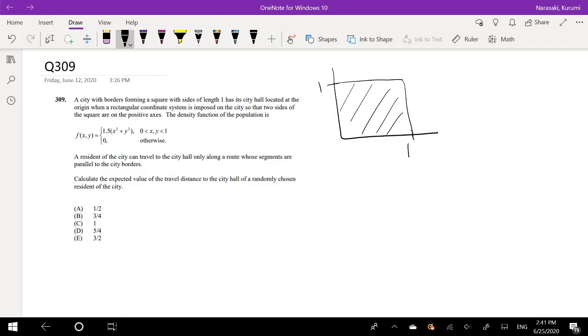A resident of the city can travel to the city hall only along a route whose segments are parallel to the city borders. So it can only go this way, or it can only go this way. Calculate the expected value of the travel distance to the city hall of a randomly chosen resident of the city.